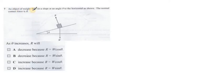An object of weight W is on a slope at an angle of theta to the horizontal as shown. The normal contact force is R. This is an inclined plane case. In an inclined plane, if you keep increasing the angle, the reaction force keeps decreasing. So as theta increases, R will decrease. But if you see, R will decrease because of R equal W cos theta. The component of the weight parallel to the R is basically W cos theta. So your option is A.